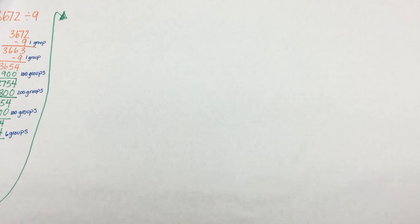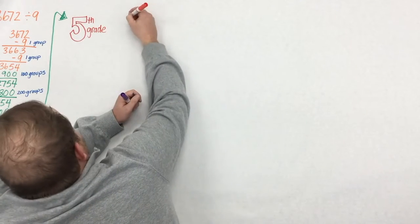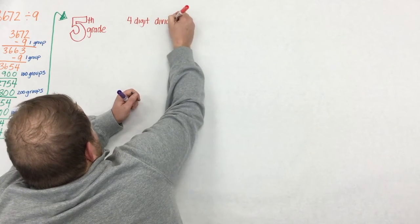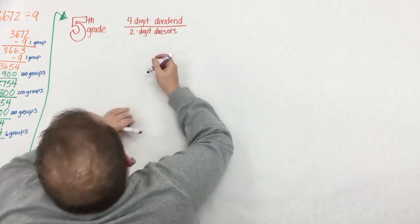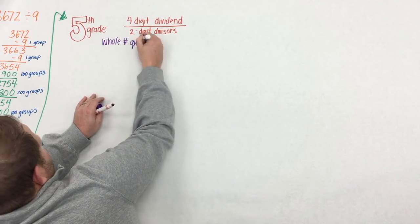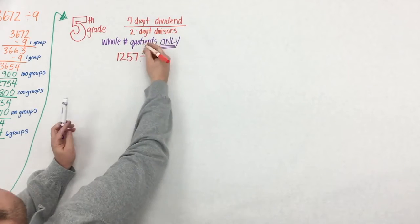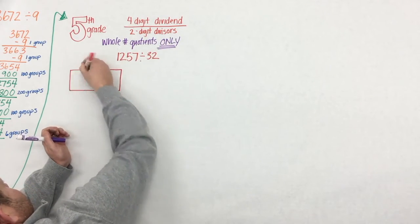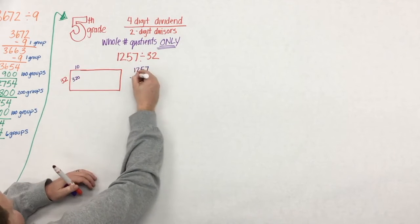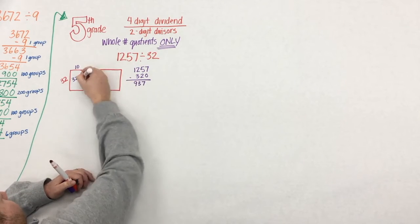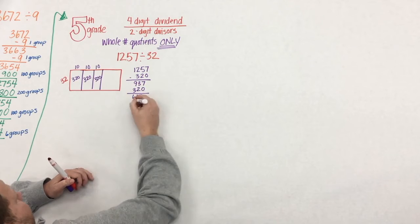Then, as students begin to dive into fifth grade, they extend this understanding that they've built conceptually from third and fourth grade. Only this time, they deal with four-digit dividends and two-digit divisors. The big piece here is that students deal with numbers and equations where they'll only have whole number quotients. All that means is that the decimal shouldn't be in the answer, but it can be in the dividend, and we can have a decimal in the divisor.